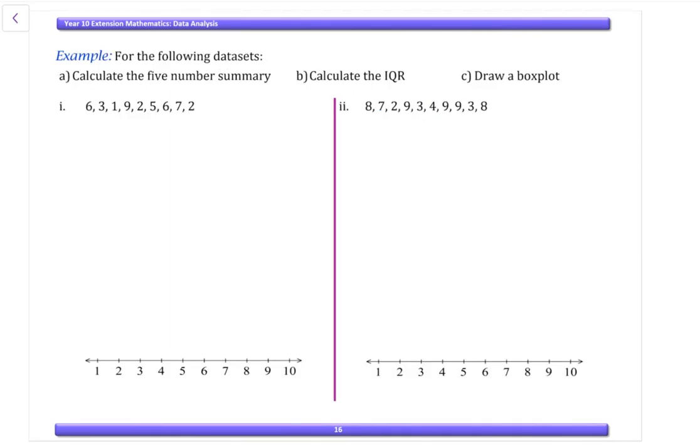So let's look at an example. For the following data sets, calculate the five number summary, calculate the IQR and draw the box plot. For the first one we need to put our data in order. That's our first step. Cross our data off as we do it so we know we don't miss anything. We have nine pieces of data.